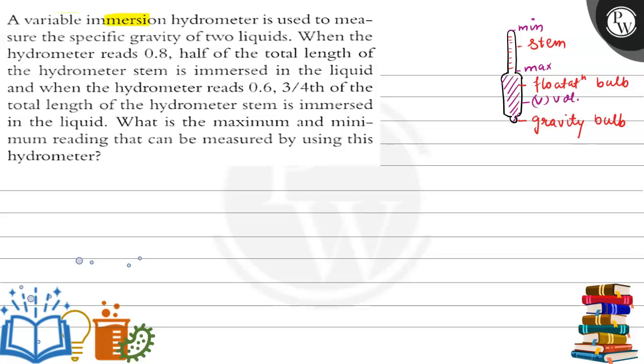A variable immersion hydrometer is used to measure the specific gravity of two liquids. When the hydrometer reads 0.8, half of the total length of the hydrometer stem is immersed in the liquid.